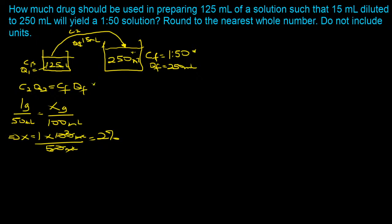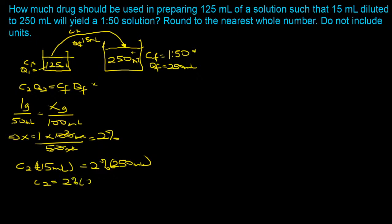We solve for c2 using c2 × q2 = c_final × q_final. The final concentration of 1:250 converts to 0.4%, the volume is 250 mL, and q2 is 15 mL. So c2 = (0.4% × 250) / 15. Wait — the instructor actually converts 1:50 to 2%, then plugs in: c2 = (2% × 250) / 15 = 33.33%.